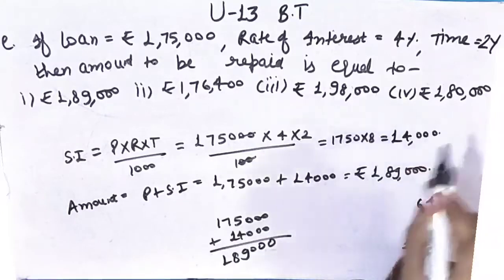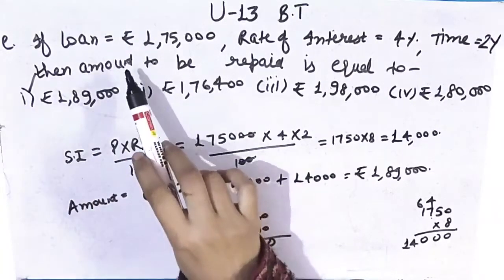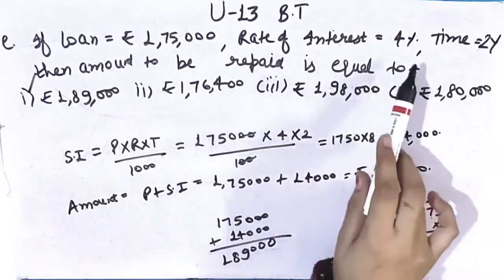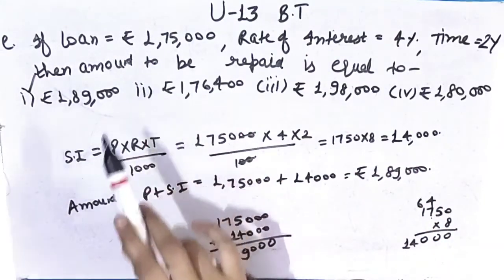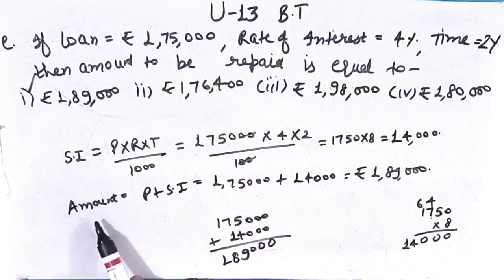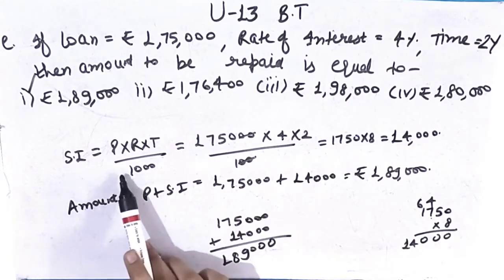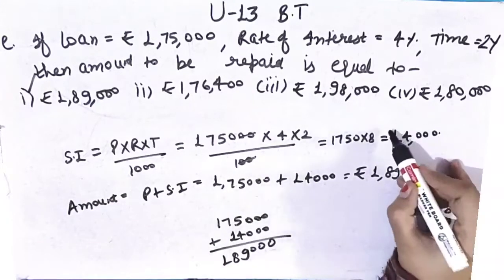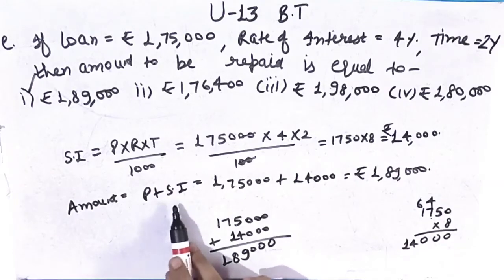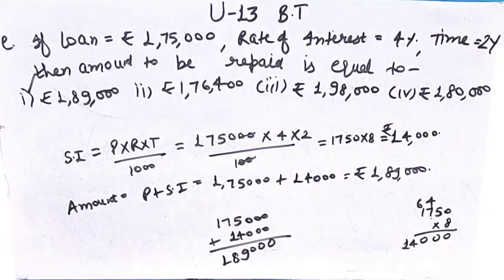Which option is correct? First option. Is it clear? Let's recap: loan given means principal. Rate of interest and time are given, you have to find amount. Before finding amount, we find simple interest first, because formula of amount is principal plus simple interest. Principal is given, simple interest came out to Rs.14,000. So amount is 1,75,000 plus 14,000 equals Rs.1,89,000. First option is correct.